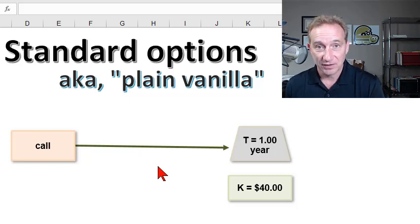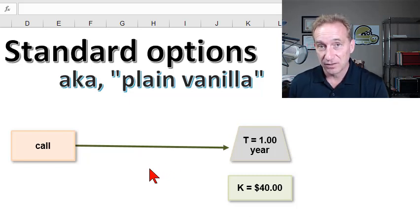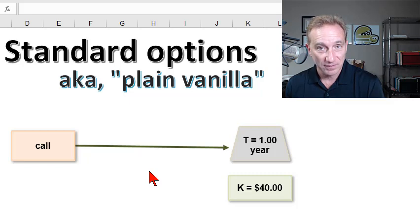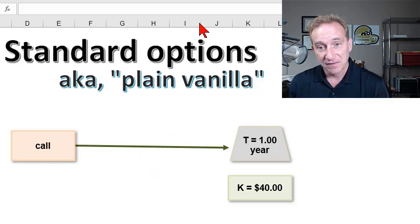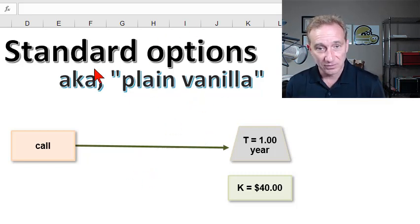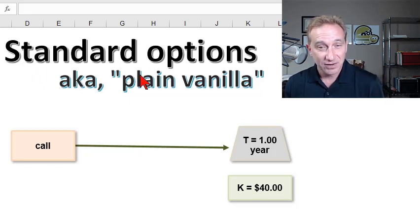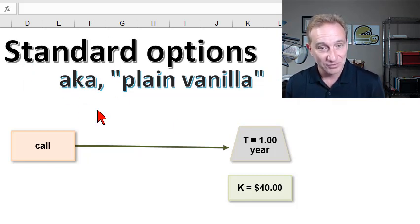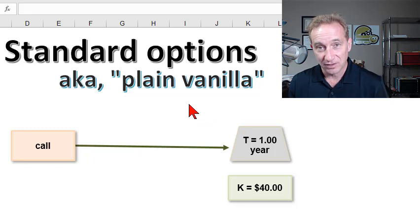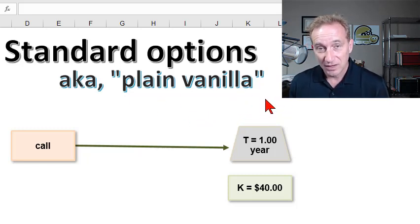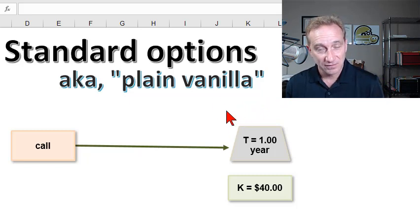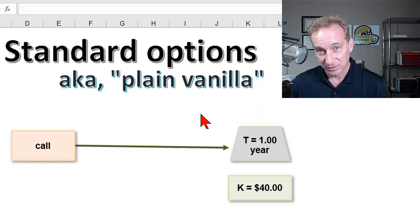Hello there. So far in this discussion of derivatives, I've been following John Hull as he is assigned in Topic 3 of the FRM. The discussion about stock options has really been about what we would call standard options. Standard options are so common that we oftentimes don't even bother to explicitly say that we're talking about standard options. Another term for these are plain vanilla options — options that would trade on an exchange because the specifications are standardized according to the contract.